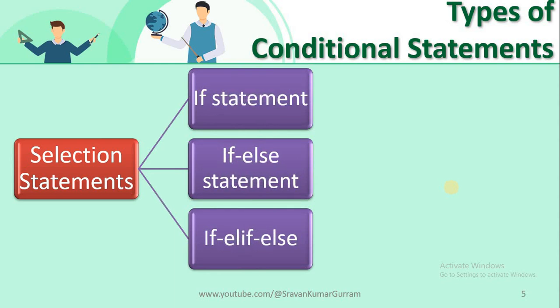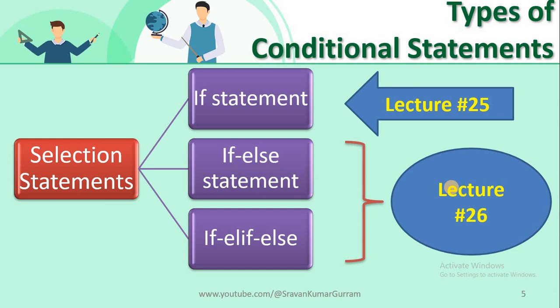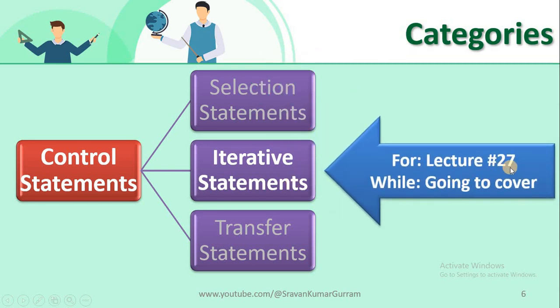In selection statements, we have three categories: if statement, if-else statement, and if-elif-else statements. We covered if statement in lecture 25, and if-else and if-elif-else in lecture 26. So the selection statements part is over. The second category of control statements is iterative statements. In lecture 27, we covered for loop, and the second iterative statement — while loop — is what we are going to cover in this session.